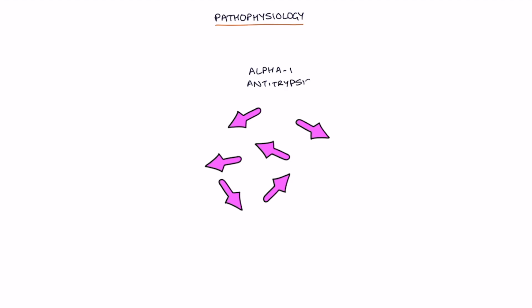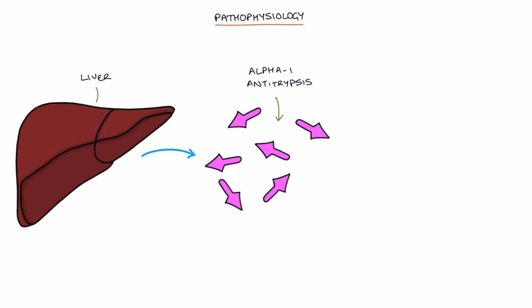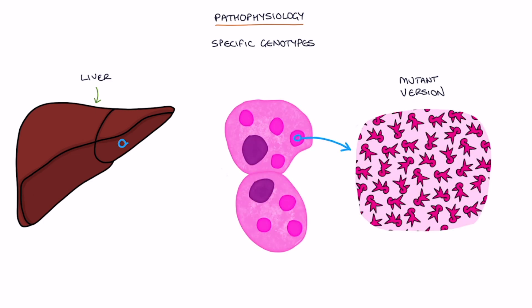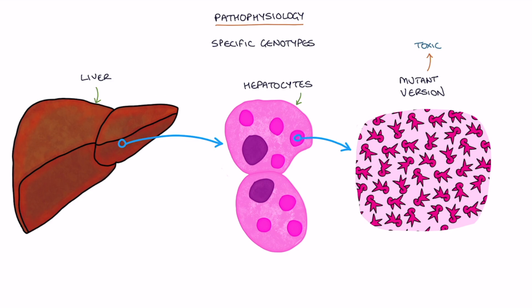Alpha-1 antitrypsin is produced in the liver. In specific genotypes of alpha-1 antitrypsin deficiency, an abnormal mutant version of the protein is made that gets trapped and builds up inside the liver cells or hepatocytes. These mutant proteins are toxic to the hepatocytes, causing inflammation in the liver.